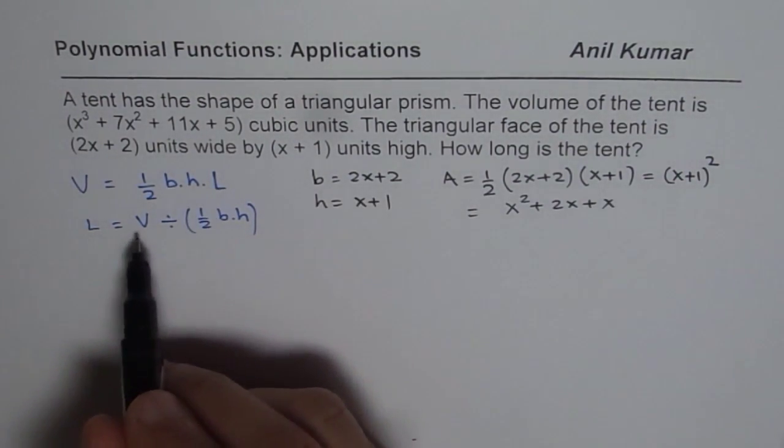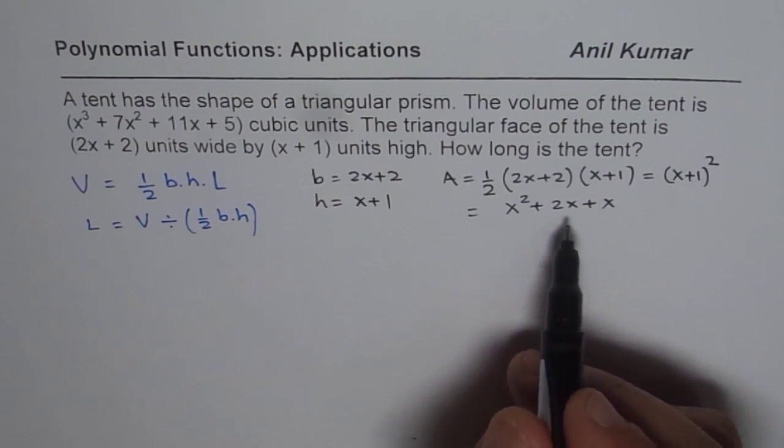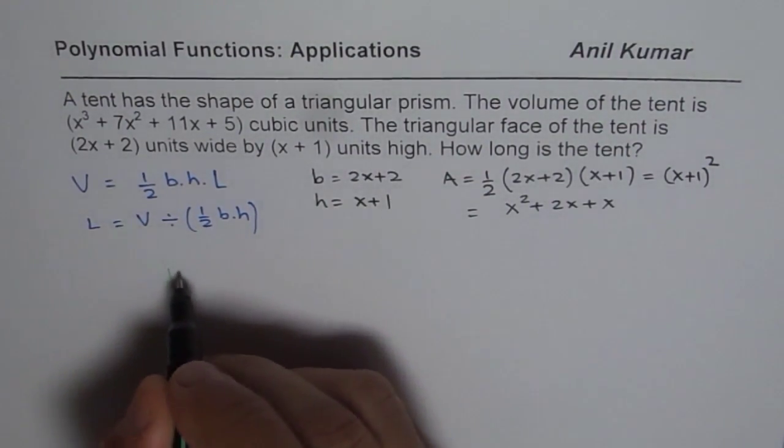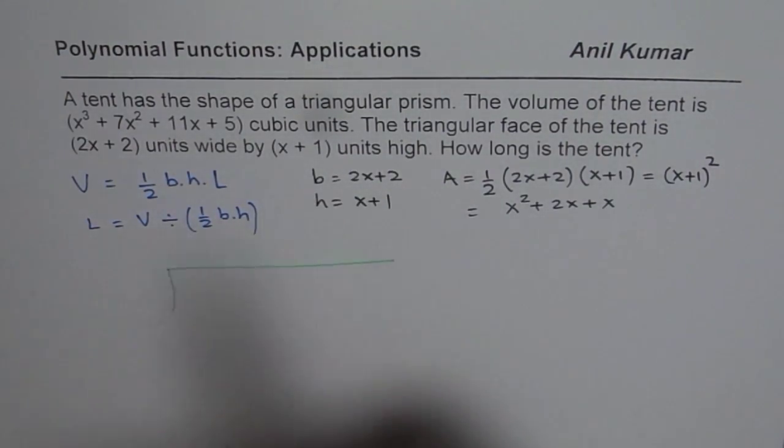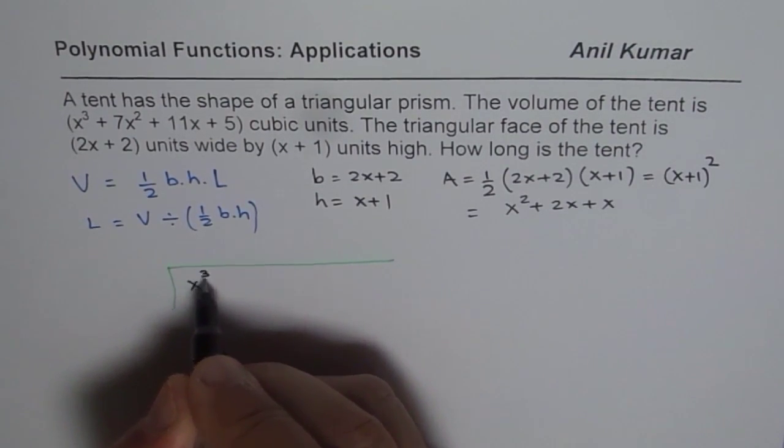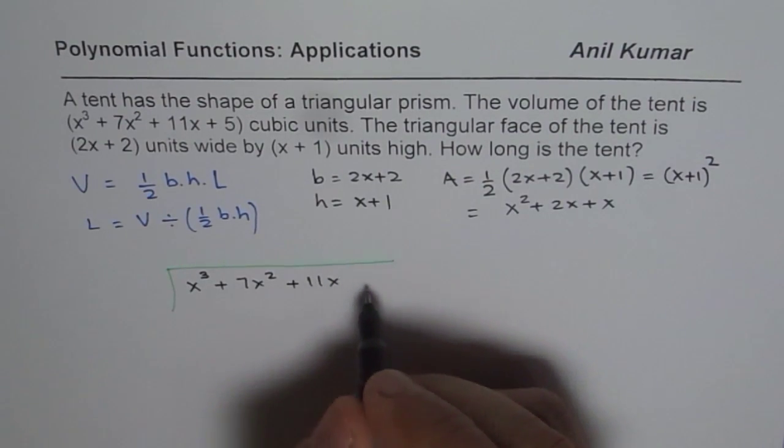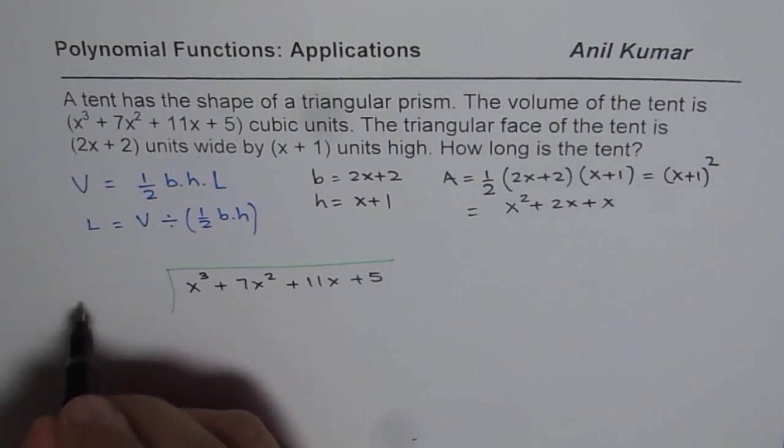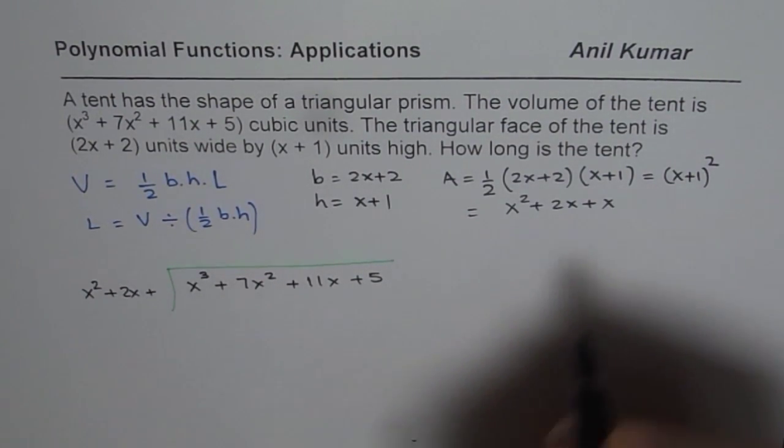Now, to find the length, we know the volume. So we can perform long division at this stage and get the length. Let's do the long division now. We are given that the volume is x cubed plus 7x squared plus 11x plus 5.